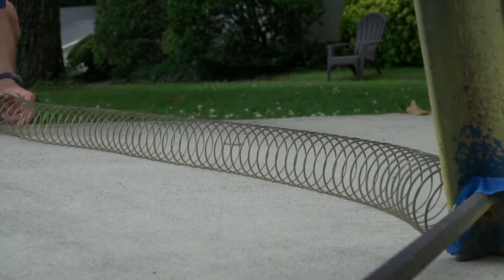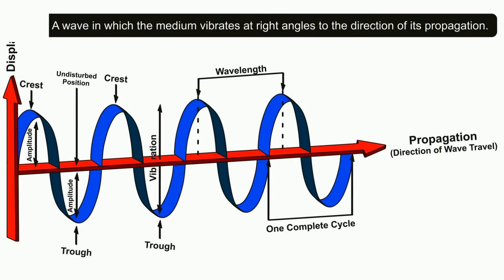Let's take a look at the anatomy of a transverse wave. The crest is the highest point of the wave. The trough is the lowest point of a wave.